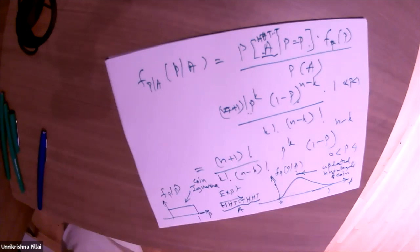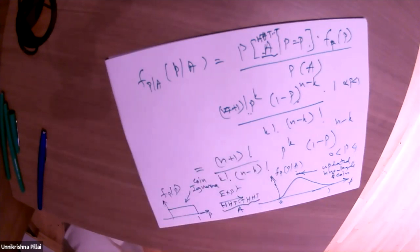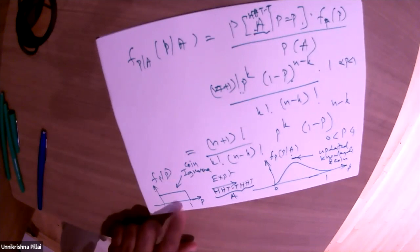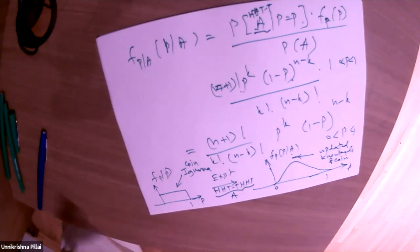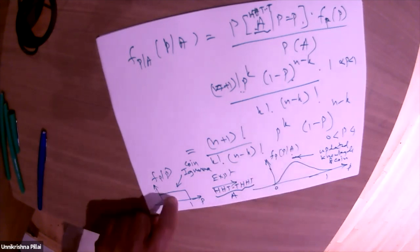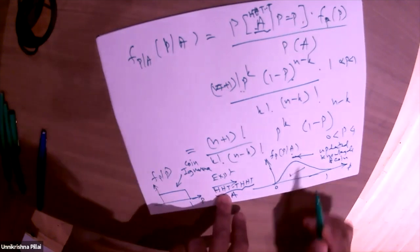To predict the probability of getting a head on the next toss, we compute P(B) = ∫₀¹ P(B|P=p)·f_{P|A}(p) dp = ∫₀¹ p · f_{P|A}(p) dp. Using the Beta posterior, this integral simplifies to (K+1)/(N+2). So if you tossed 100 times and got 53 heads, the predicted probability of the next head is 54/102 ≈ 0.529 — a quantitative, data-driven update.